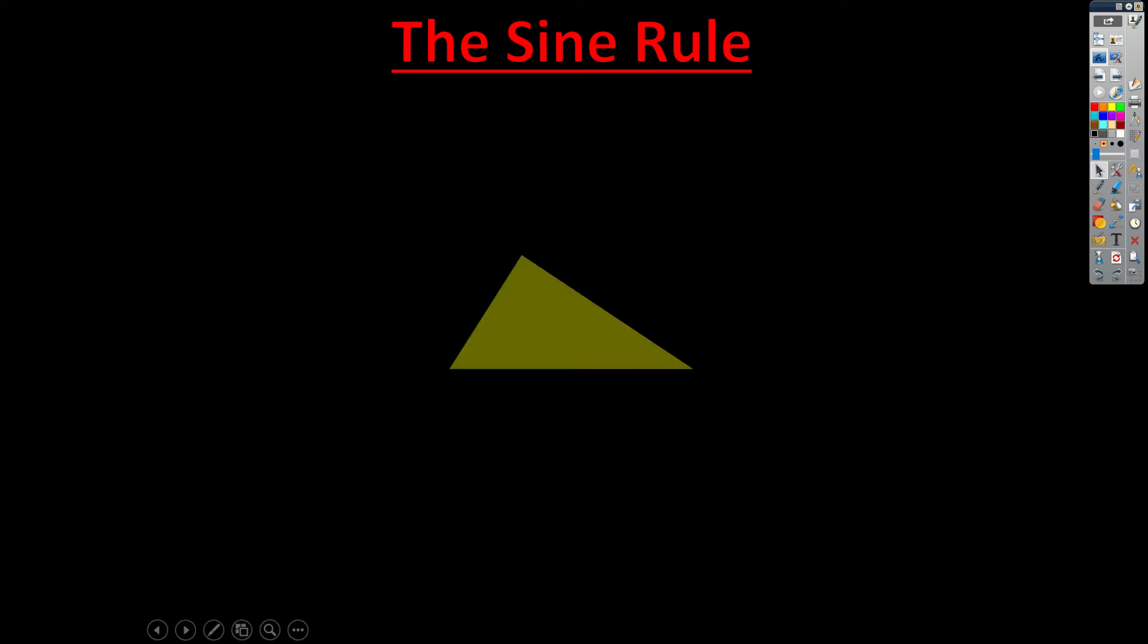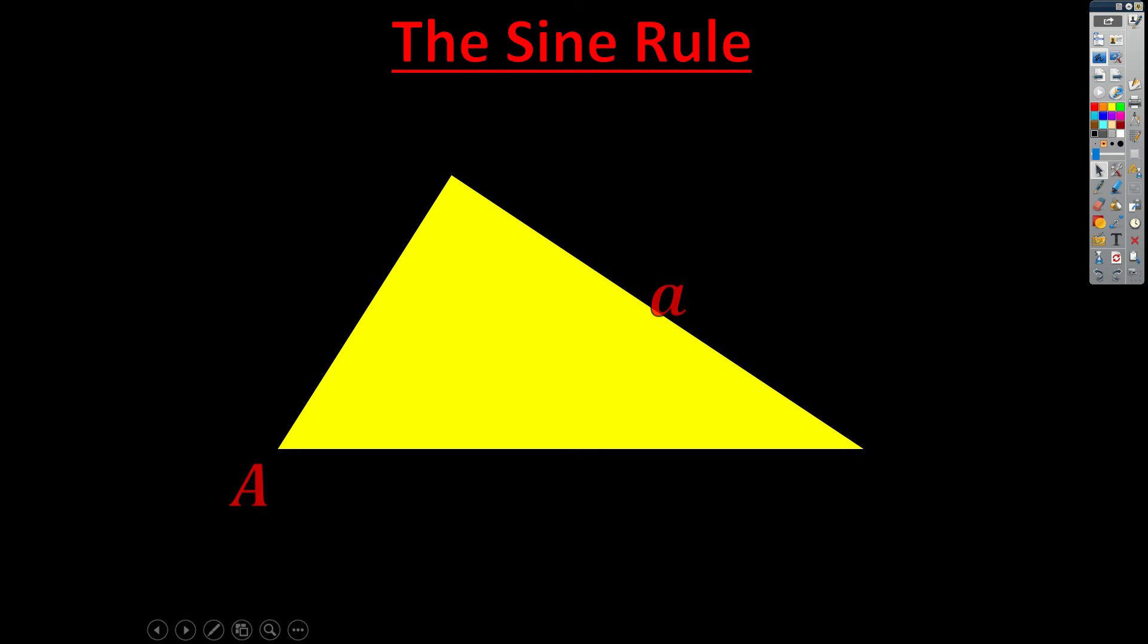So we're going to start with the same triangle we had before. We're going to have opposites labeled with A's and A's - capitals for angles, lowercase letters for the sides. Here's our three opposite pairs.